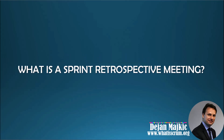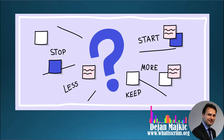So, what is a sprint retrospective meeting? It is a dedicated session held at the end of each sprint, where the Scrum team comes together to discuss what went well, what didn't go so well, and how they can improve going forward. This meeting allows the team to reflect on their processes, identify bottlenecks, and find ways to enhance collaboration, productivity, and overall effectiveness.